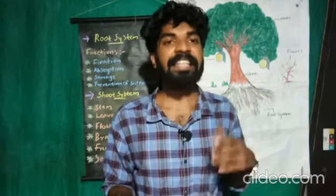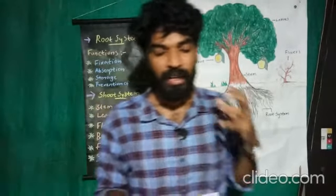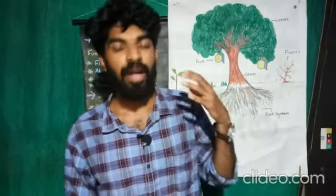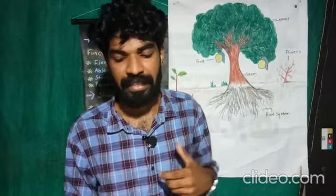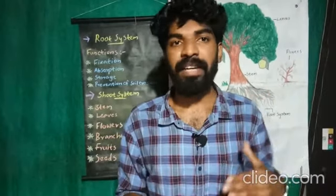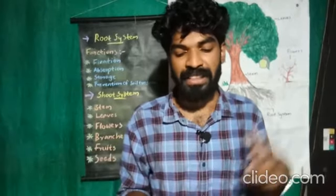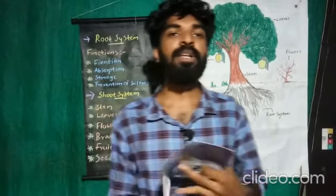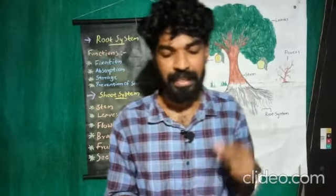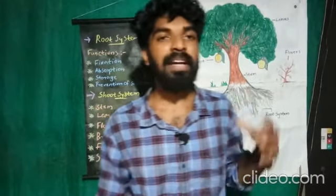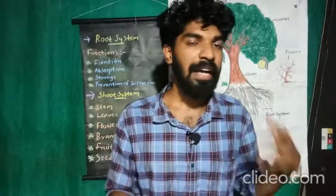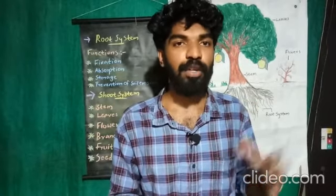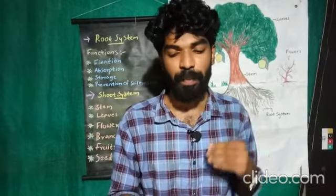Now let's do an activity. Choose the correct answer. Roots help trees to remain fixed in the ground. Roots absorb water and minerals from the soil. The stem is the main part of the shoot system. The underground part of the stem is called a tuber.